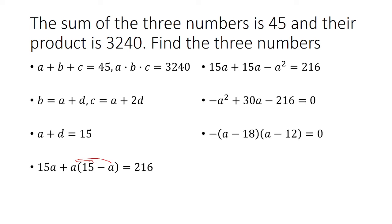From here I can factor this out. First factor out negative 1, and then we have quantity A minus 18 times quantity A minus 12. Set both factors equal to 0 and get A equals 18 and 12.